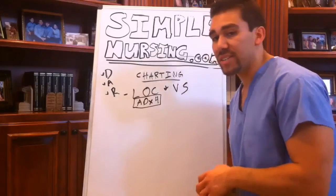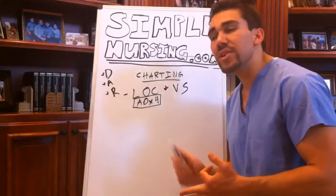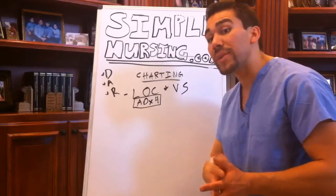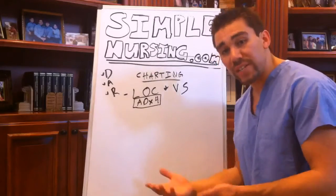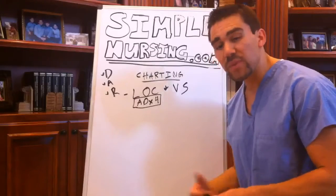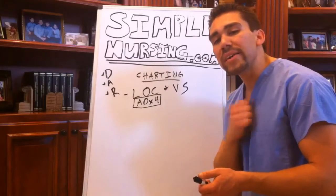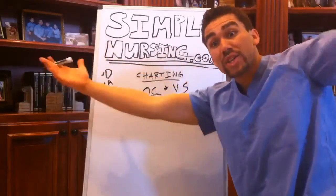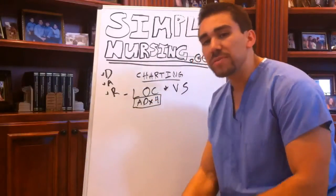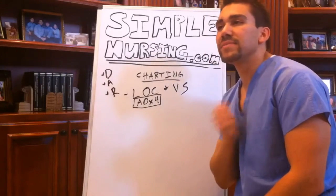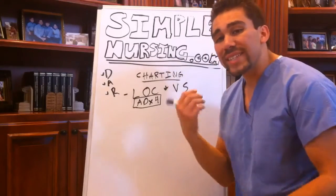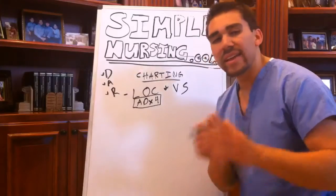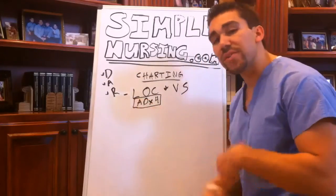I've had dementia patients who don't know their name, don't know where they're at, don't even know how to verbalize anything. One patient I was caring for in the emergency room just kept saying 'pain, pain, pain' over and over again. I went in and asked, 'Sir, what is your last name?' — Pain. 'What's the date today?' — Pain. 'Do you know where you're at?' — I was not getting through. That's why we start with LOC, level of consciousness.